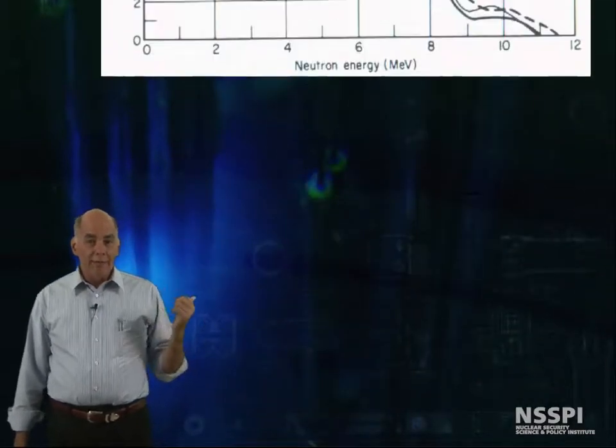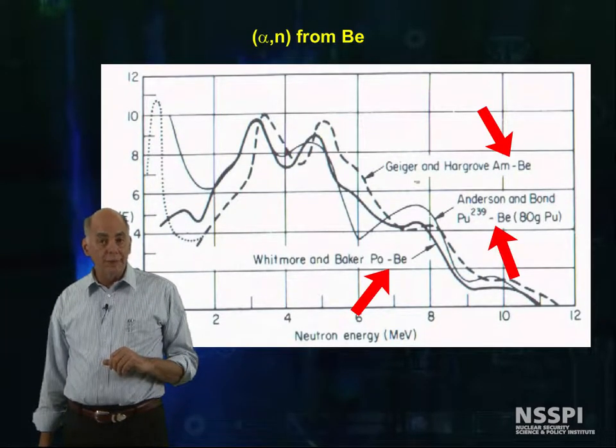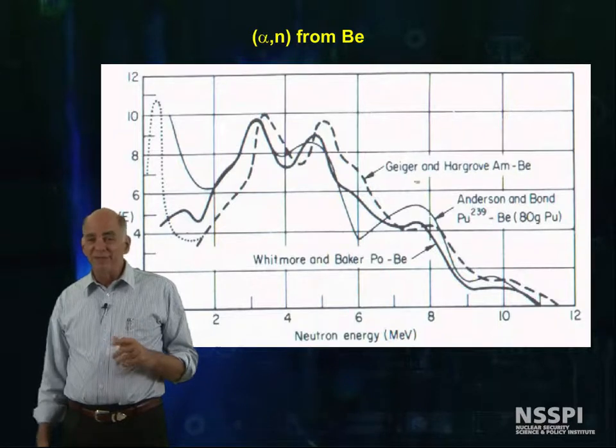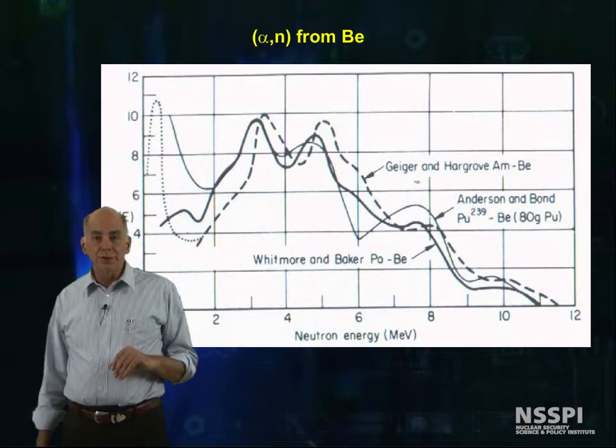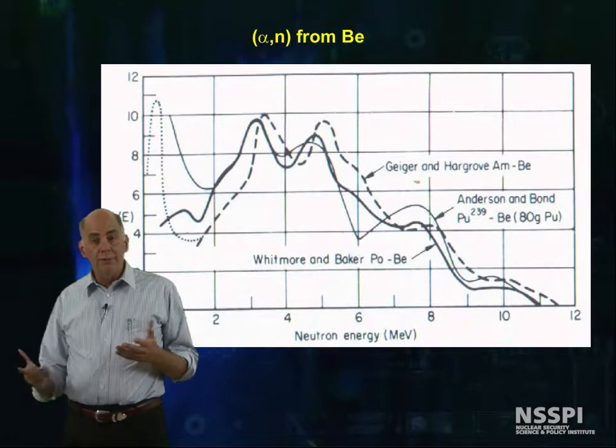This graph gives you the measured neutron energy spectra from various alpha-beryllium sources. It looks vaguely like a fission spectrum source in that very few neutrons are produced above 10 MeV.